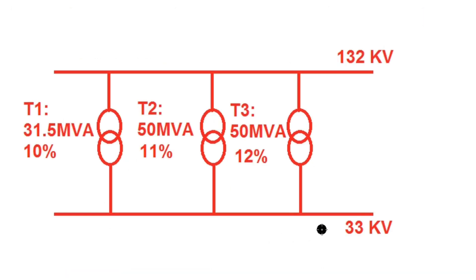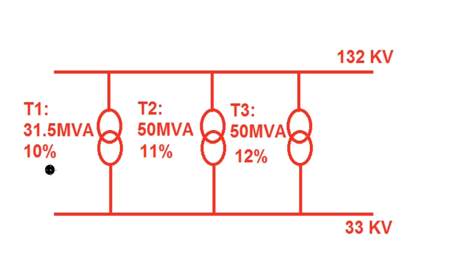Let us consider the example of three transformers operating at 132 by 33 kV. The HV side voltage is 132 kV and LV side voltage is 33 kV. For transformer 1, MVA capacity is 31.5 MVA with percentage impedance 10%; transformer 2 is 50 MVA with 11%; and transformer 3 is 50 MVA with 12%. We will determine the maximum load capacity that can be utilized from these three transformers.